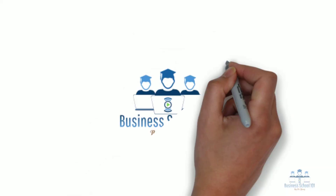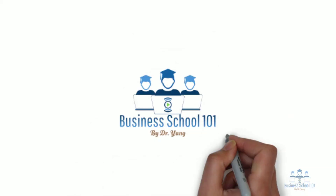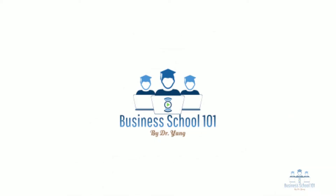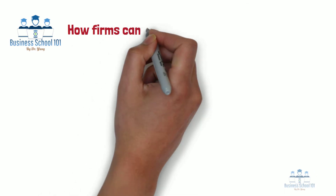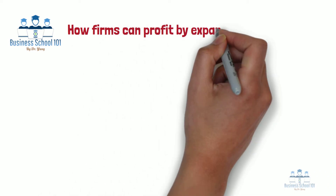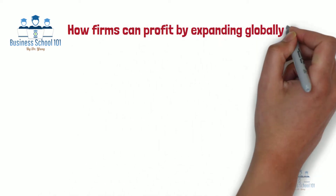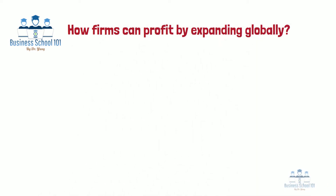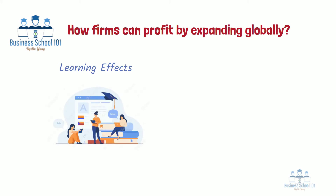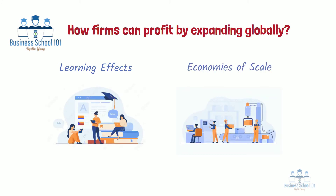Hello everyone. Welcome to Business School 101. To better understand how firms can profit by expanding globally, we need to understand two important terms: learning effects and economies of scale. In this video, I will explain these two terms to you.